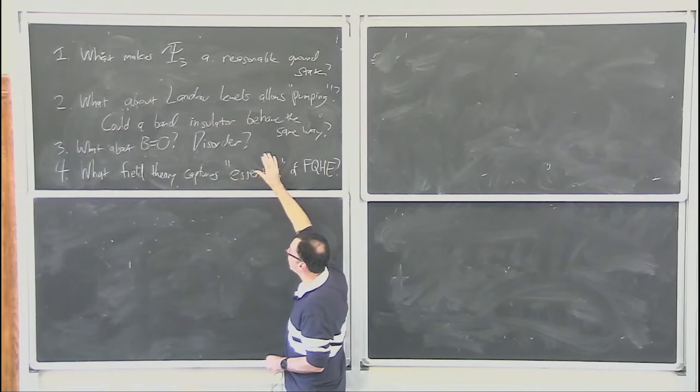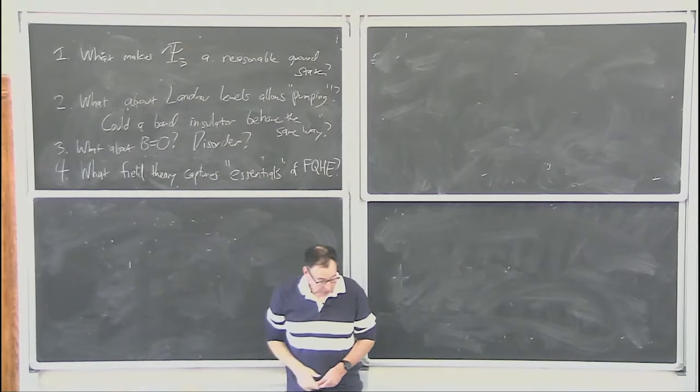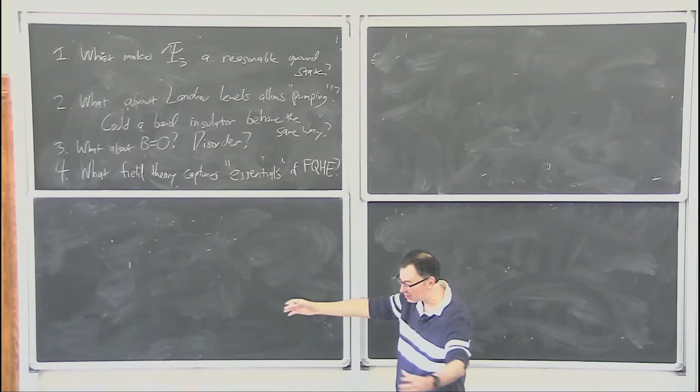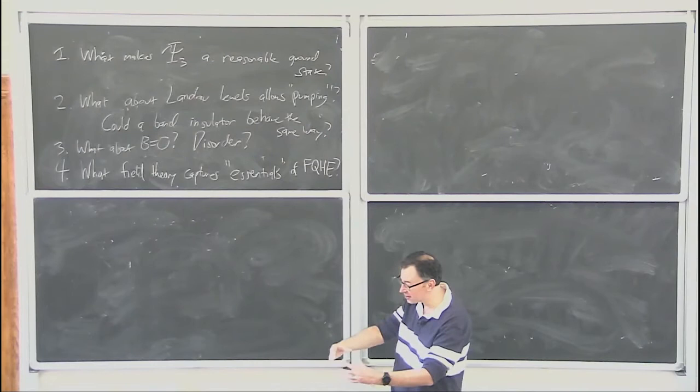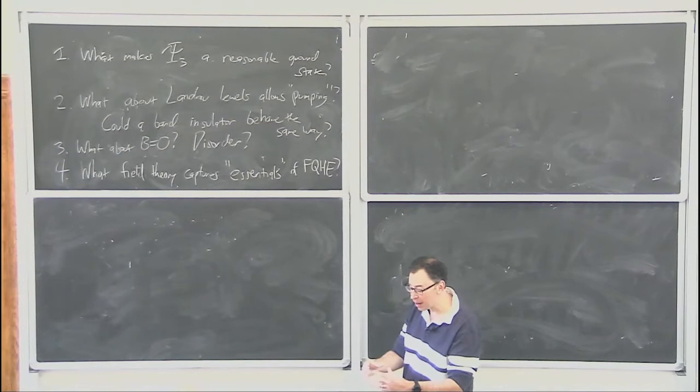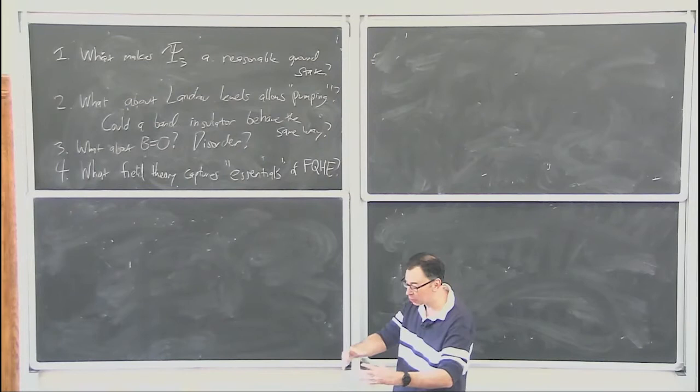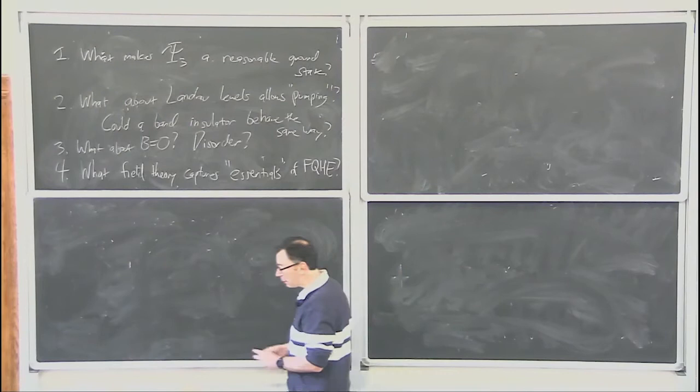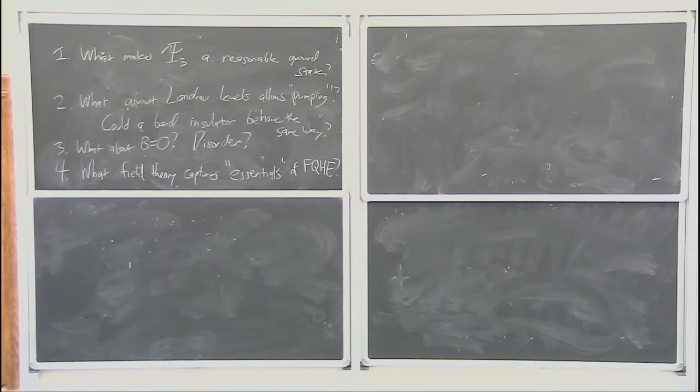For two and three we're going back to one particle physics. Question two is about this funny kind of pumping. We said that if I imagine a big Landau level and punch a hole in the center and pump flux, the states move outward. At any fixed flux, the Landau level eigenstates are like rings in this rotationally symmetric basis. Extra flux in the solenoid made the rings move outward, which was pumping in Laughlin's version. But if we took an ordinary band insulator in no magnetic field and drilled a solenoid and tried to pump flux, nothing would really happen. So there is something special about the Landau level.